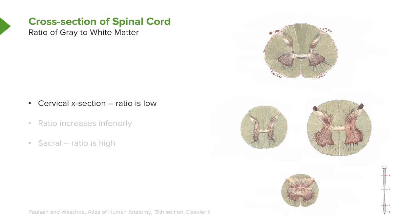The first concept is that when you look at the ratio of gray to white matter in the cervical area, you have a lot of white matter and relatively little gray matter in comparison. If you divide the area represented by gray matter by the much larger area represented by the white matter, this ratio would be low.